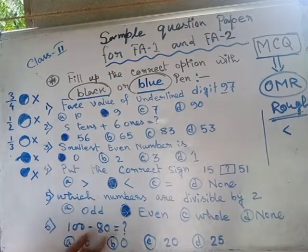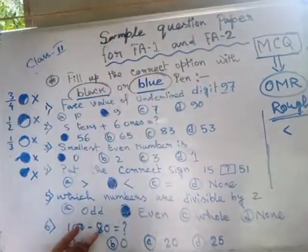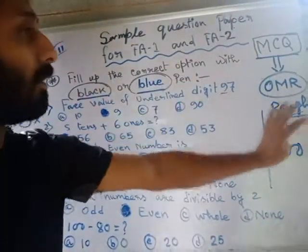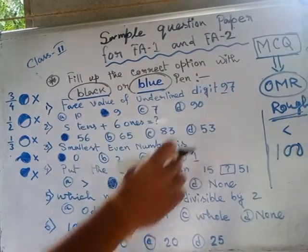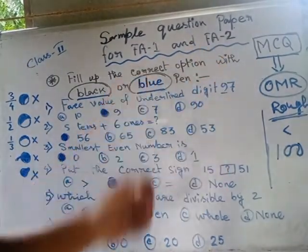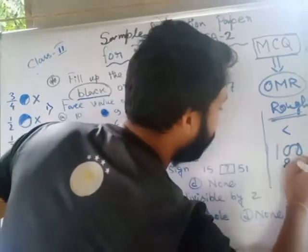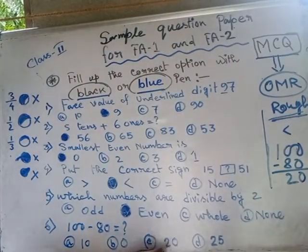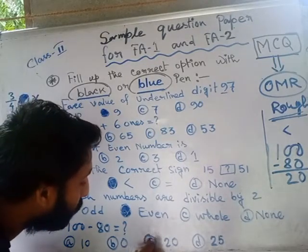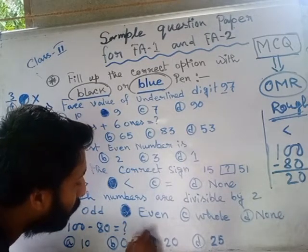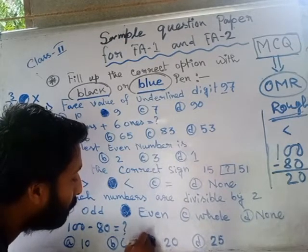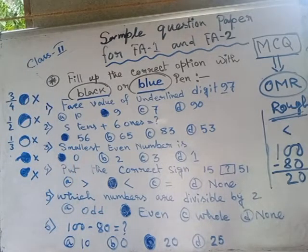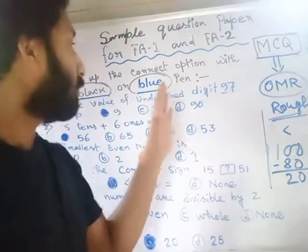For the next question — 100 minus 80 — you can use the rough portion on the right side of your exam question paper, or you can take an extra loose sheet. The answer is 20. Option C is 20, so option C is the correct answer — fill up the option C circle very carefully.